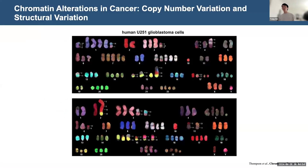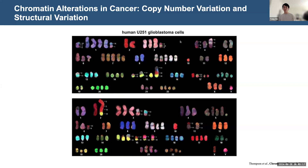When we talk about variation in chromatin structure in other fields, like cancer biology, it more commonly refers to copy number variation and structural variation, which are frequently observed in cancer cells, as I show here for the glioblastoma cell karyotype. More importantly, this variation is highly heterogeneous and differs from cell to cell.